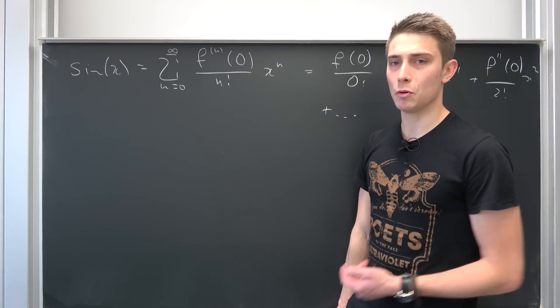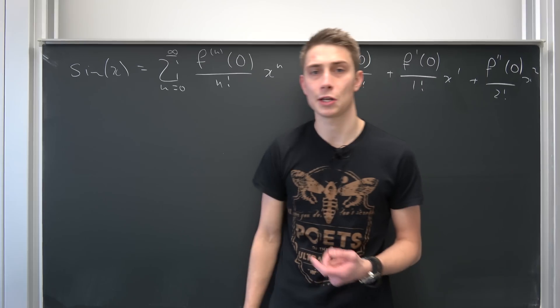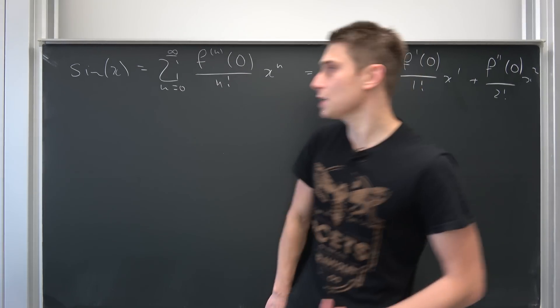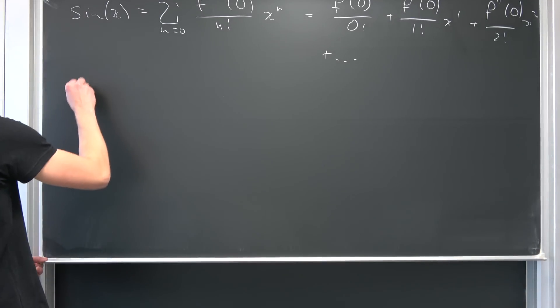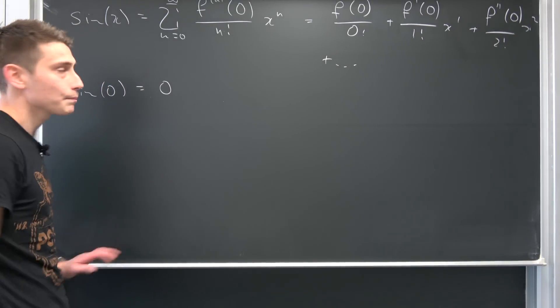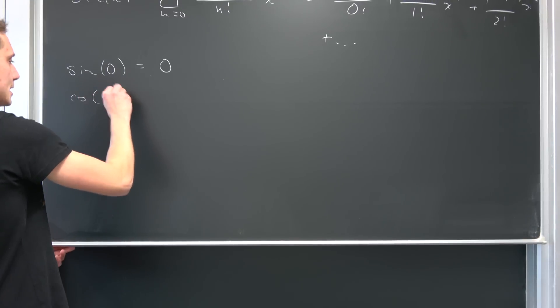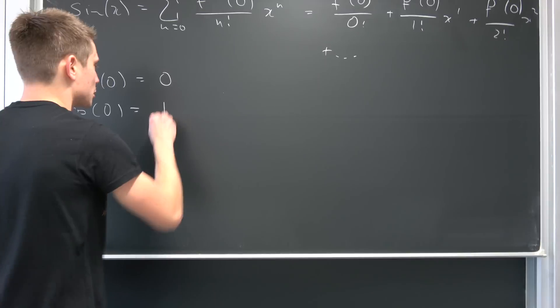What we want to do now? We want to see if we can find a pattern in the derivatives of the sine evaluated at zero. So let's start off with sine of zero. Let's start slow. Sine of zero. Well, it's just zero. So that was easy. First derivative of sine is the cosine evaluated at zero. Well, that's easy. This is just one.